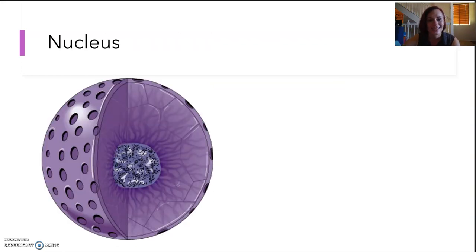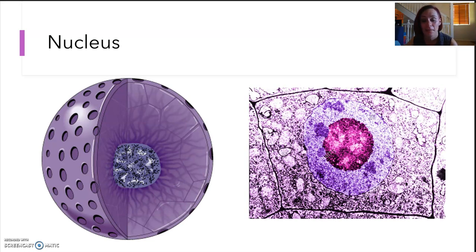Nucleus has a variable location. It contains all the genetic information. It's surrounded by its own version of a membrane, and it regulates the activity of the cells. It's very easy to see when you look down a microscope.